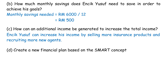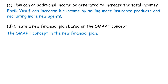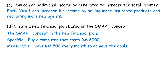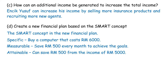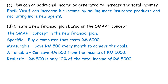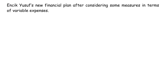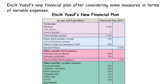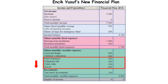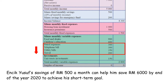The new financial plan based on the SMART concept: Specific — buy a computer that costs RM6,000; Measurable — save RM500 every month; Attainable — can save RM500 from income of RM5,000; Realistic — RM500 is only 10% of total income of RM5,000; Time-bound — one year is enough to save RM6,000 with monthly savings of RM500. Enzik Youssef's savings of RM500 a month can help him save RM6,000 by end of year 2020 to achieve his short-term goal.